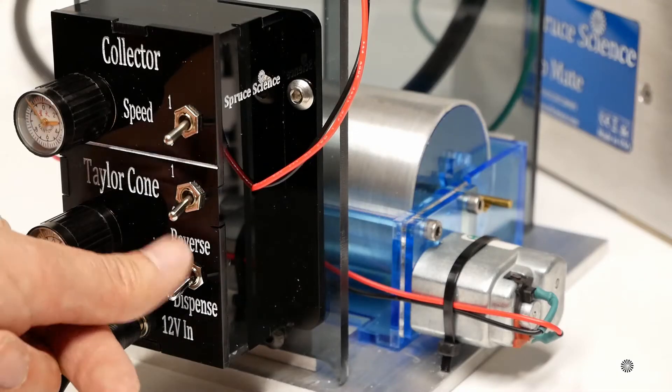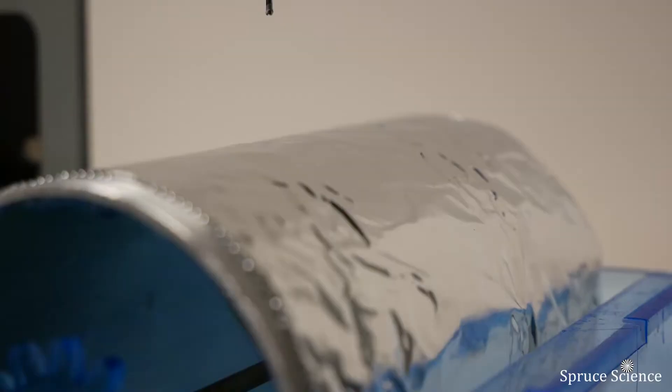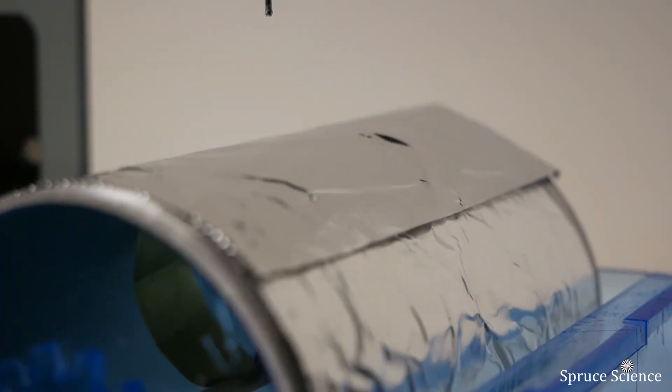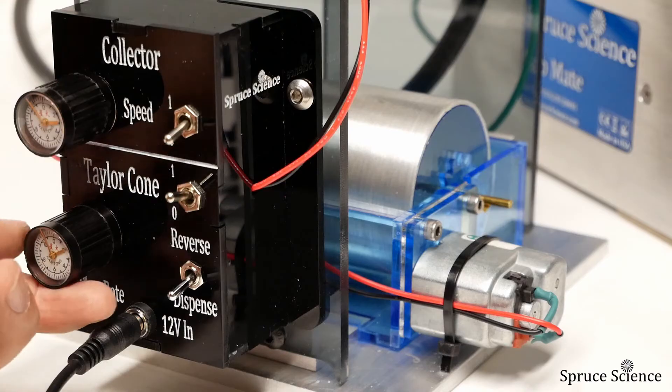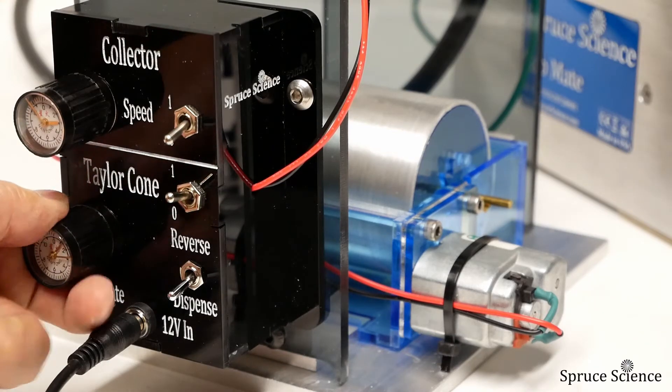Set the pump direction to dispense and turn on the pump. When the pusher inside the white tube is engaged with the syringe plunger, liquid droplets will form at the tip of the needle. This pump speed can be adjusted using the potentiometer located on the control panel.